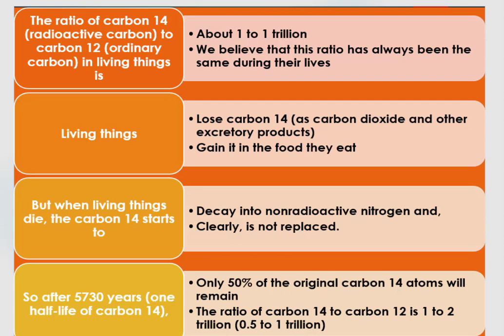The ratio of radioactive carbon-14 to ordinary carbon-12 in living things is about 1 to 1 trillion. We believe this ratio has always been the same during their lives. Living things lose carbon-14 as carbon dioxide and other excretory products and gain it through food. But when living things die, carbon-14 starts to decay into non-radioactive nitrogen and is not replaced. So after 5,730 years — the half-life of carbon-14 — only 50% of the original carbon-14 atoms remain, and the ratio of carbon-14 to carbon-12 becomes 1 to 2 trillion.